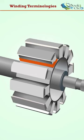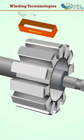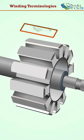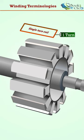The number of turns in the same slot is grouped to form a coil. This is a multi-turn coil. If the coil consists of only one turn, it is called a single-turn coil.